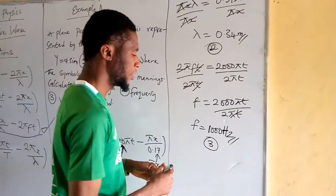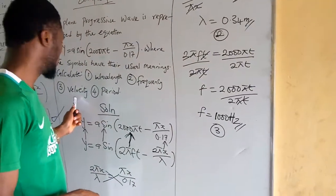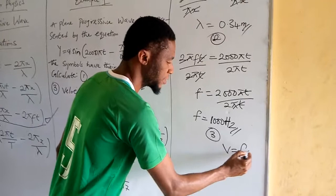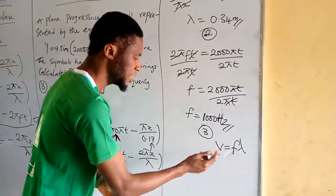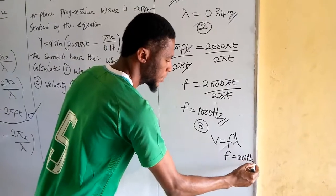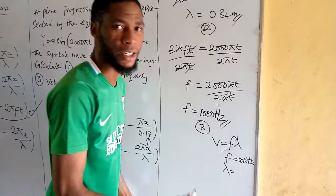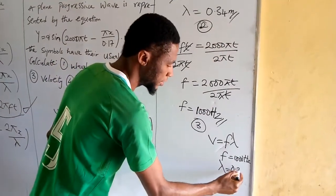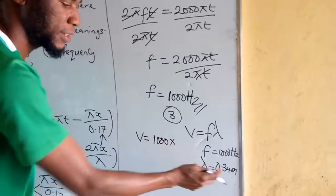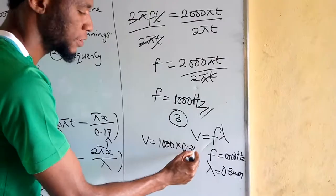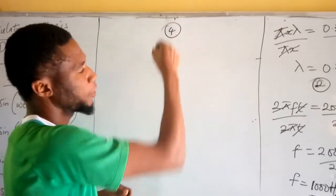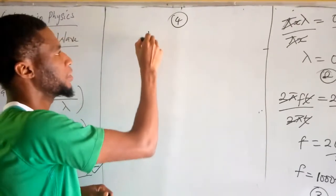For question number 3, we calculate the velocity. We know that the formula for wave velocity is V equals frequency times wavelength. Our frequency is 1000 Hz and our wavelength λ is 0.34 meters, so V equals 1000 times 0.34, which gives us 340 meters per second.